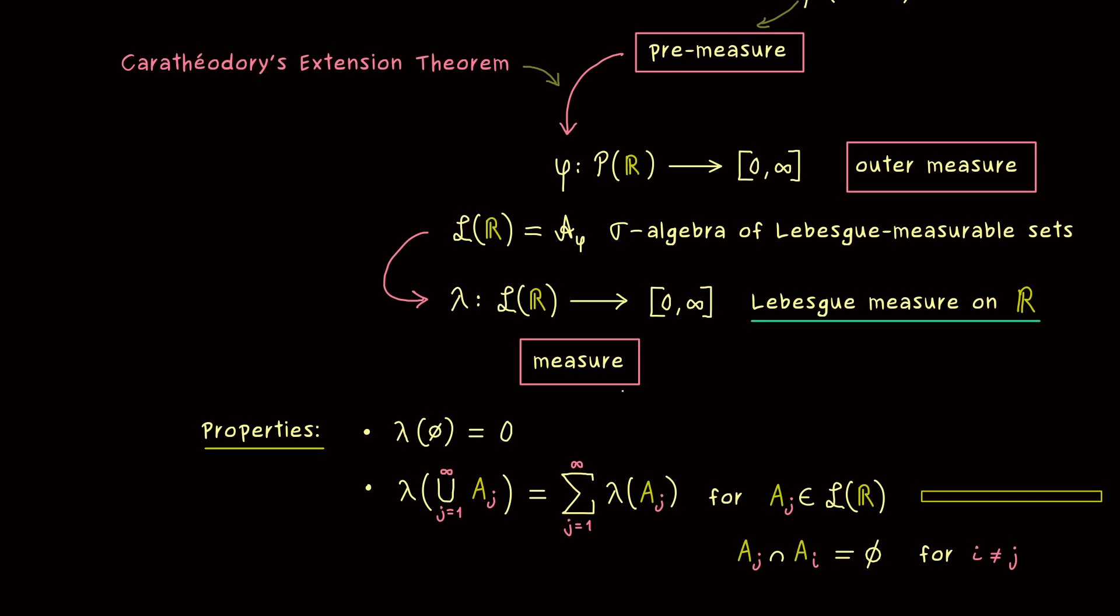In our case, this property is easy to understand, because it just means, if you have a given set, so a subset in R, which is measurable, then you can split it up into countable many parts. And then you can just calculate the lengths of the different parts. And they will add up to the length of the whole set. Indeed, this is what we expect of a well-defined measure.